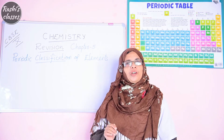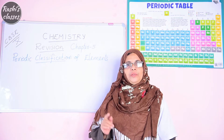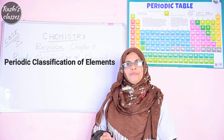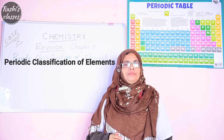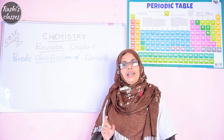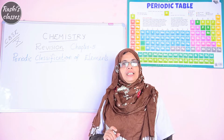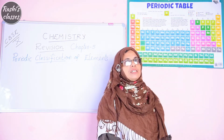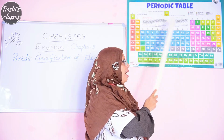Hi all, hope you are preparing well for the upcoming board examination. Today we are going to do the revision of Chapter 5 - Periodic Classification of Elements. There are 118 elements in the periodic table. In 1913, Henry Moseley classified the elements in the increasing order of their atomic numbers. The first element is hydrogen with atomic number 1.